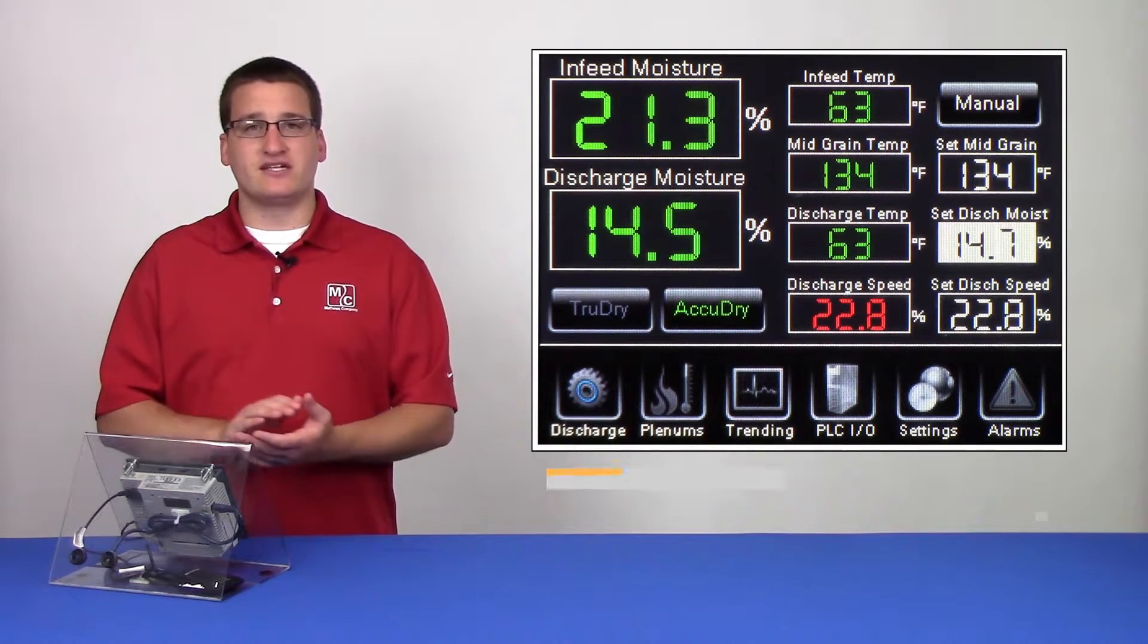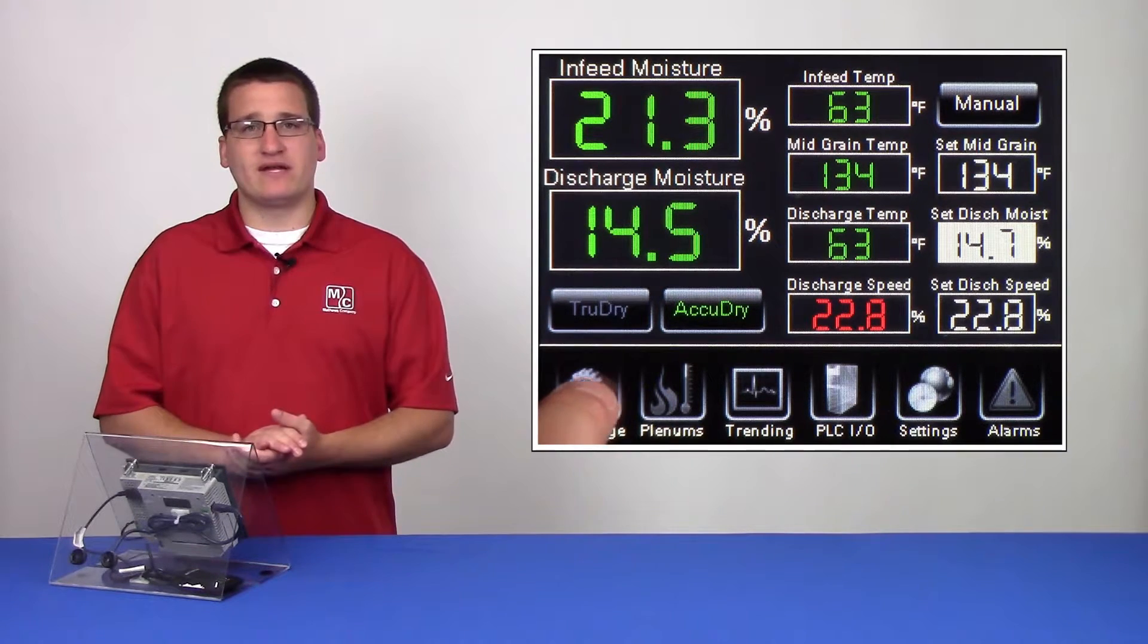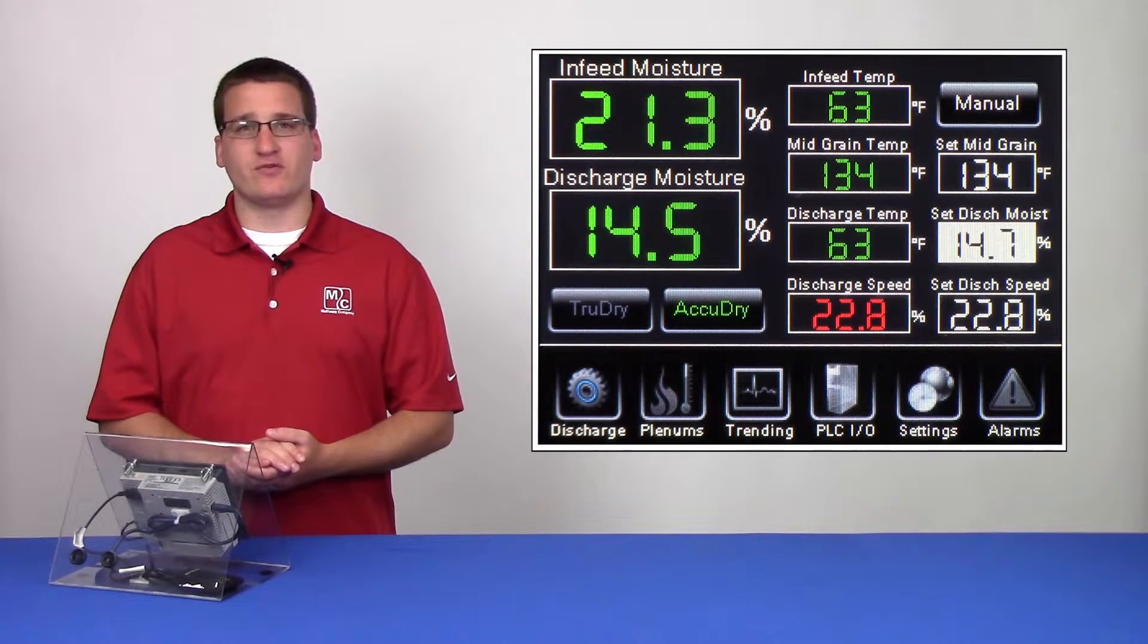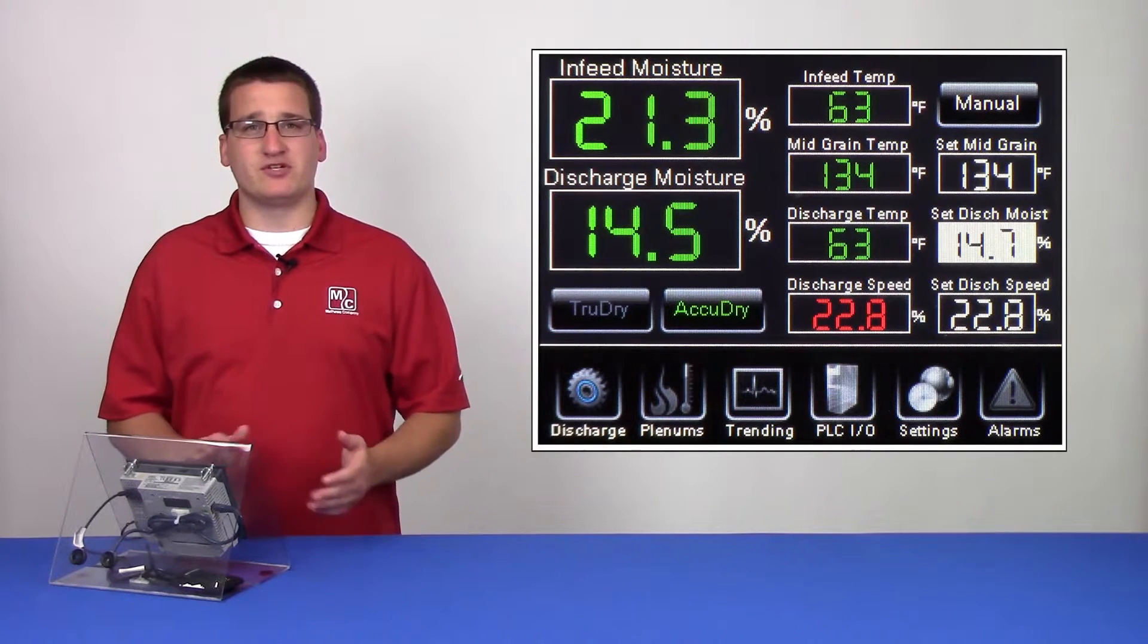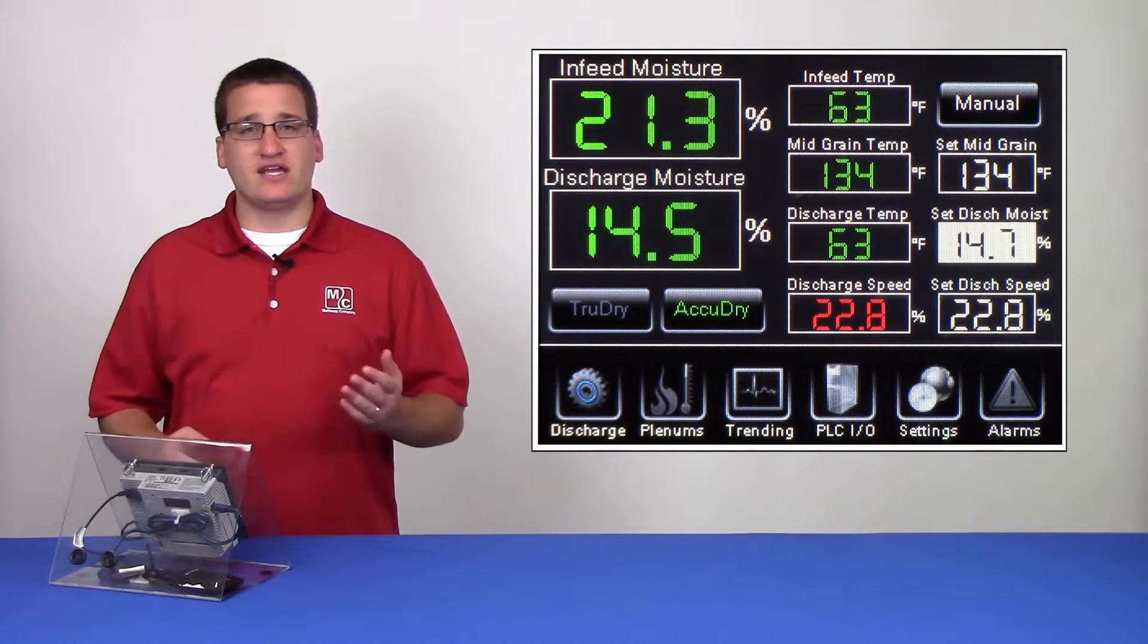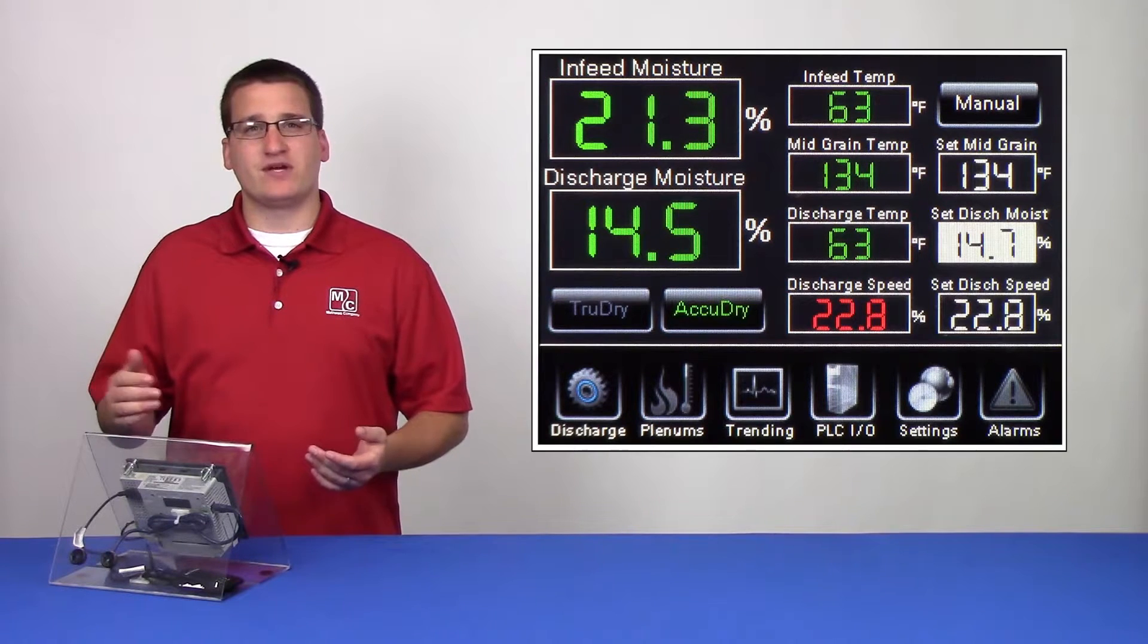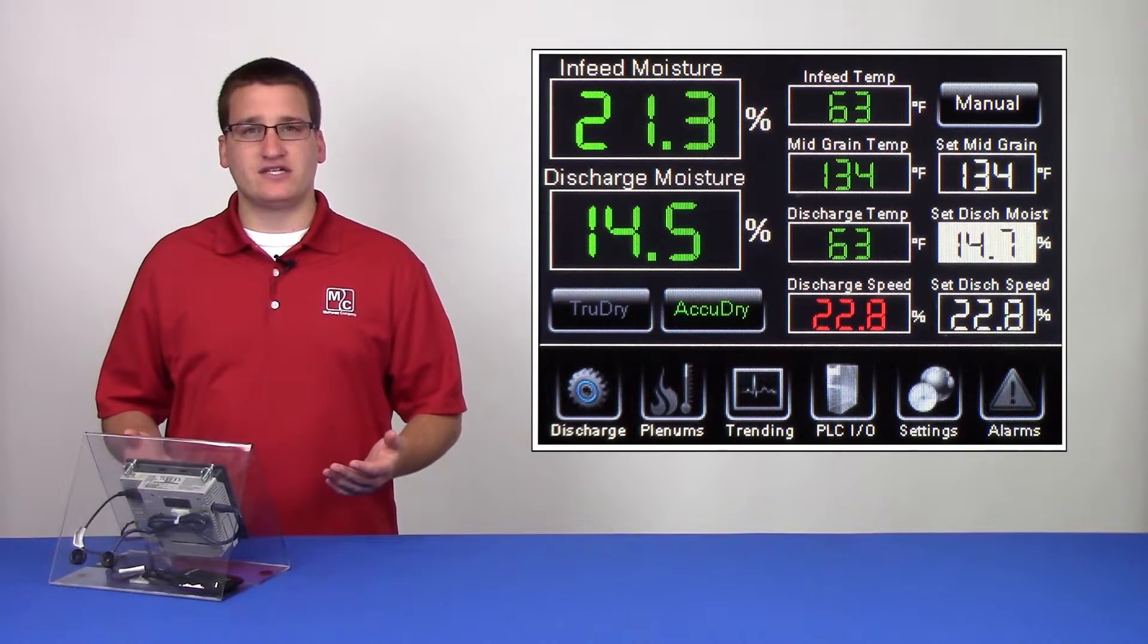First, we'll look at the discharge chapter. If you're not already here, you can get here by tapping the discharge button on the ribbon. This is where the user will spend the majority of their time, because from here they can monitor infeed and discharge moistures, they can change their set points, and they can see the current discharge speed.